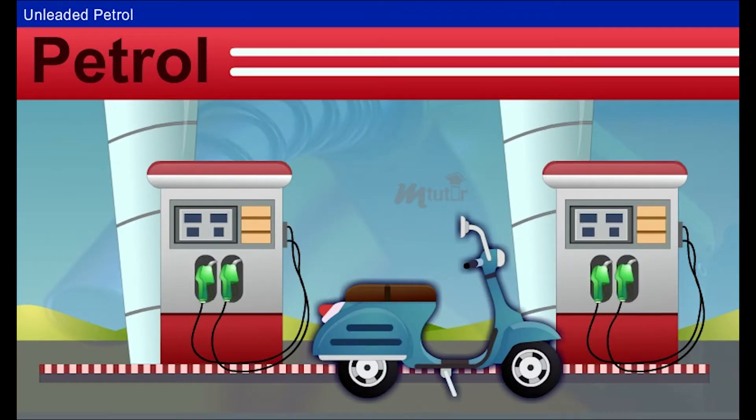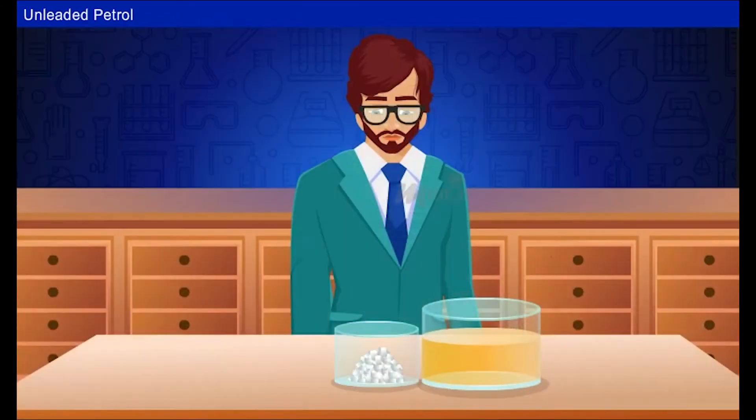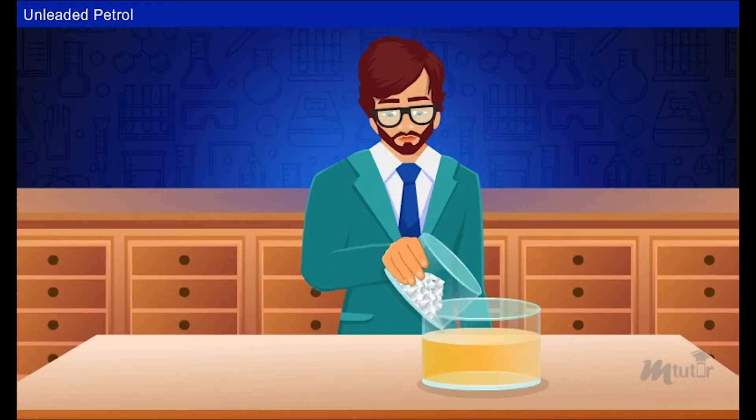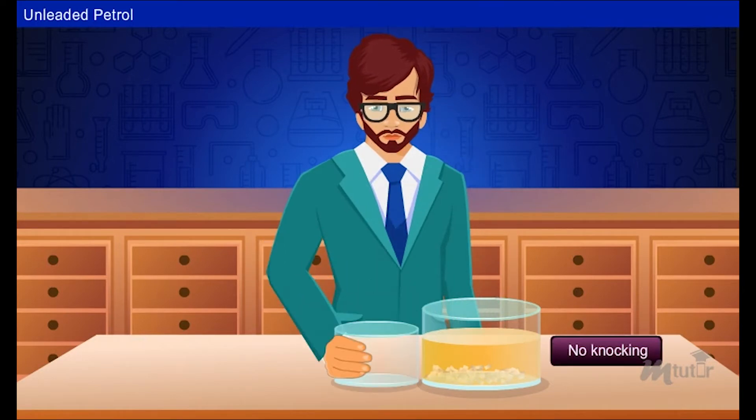Usually petrol also contains additives such as anti-knock compounds and corrosion inhibitors. Petrol companies discovered that adding a lead-based additive eliminated the knocking, thus giving rise to leaded petrol.